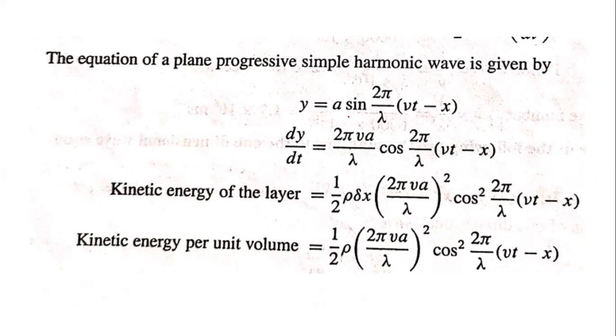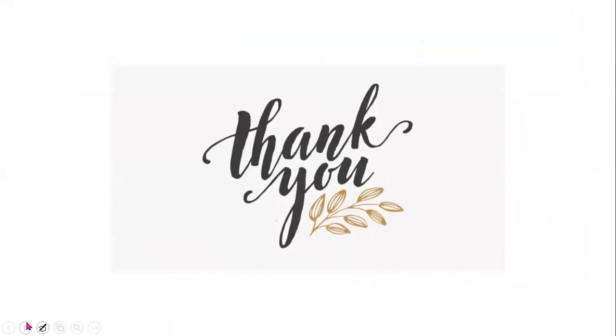y equals a sin 2 pi by lambda into (vt minus x). First differentiate with respect to time. dy by dt equals 2 pi v a divided by lambda cos 2 pi by lambda into (vt minus x). This is the kinetic energy of the plane progressive wave. Thank you.